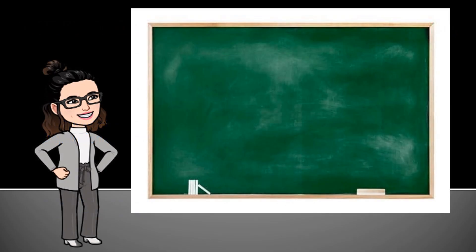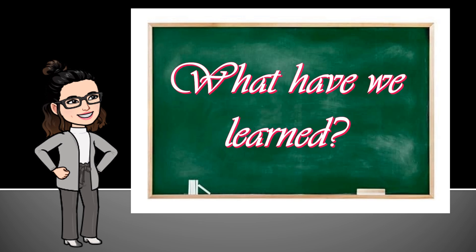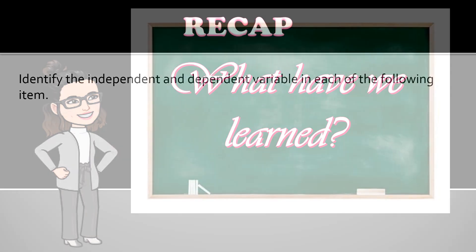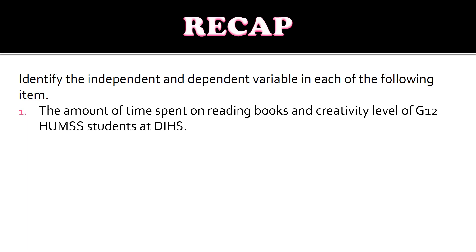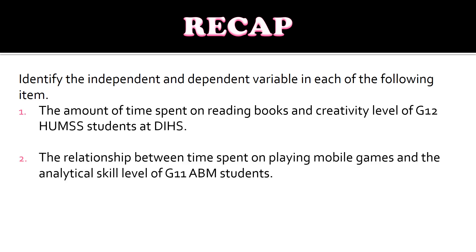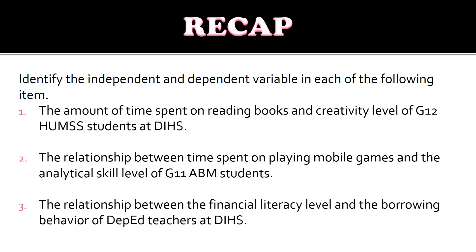That is all for the topic. Now we would check what we have learned. Identify the independent and dependent variable in each of the following items. Number one: the amount of time spent on reading books and the creativity level of grade 12 students at Dasmariñas Integrated High School. Number two: the relationship between time spent on playing mobile games and the analytical skill level of grade 11 students. Number three: the relationship between the financial literacy level and the borrowing behavior of teachers at Dasmariñas Integrated High School.